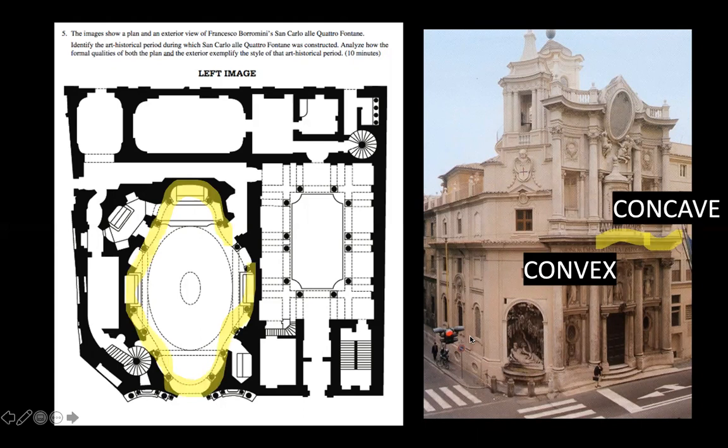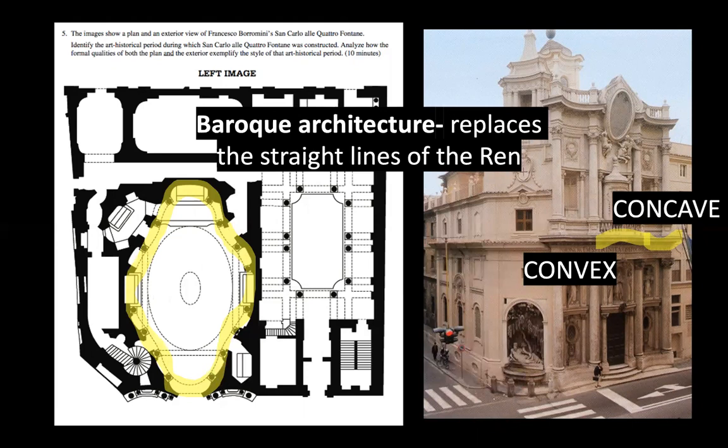In your floor plan, go ahead and highlight that undulating wall moving around the nave. Looking up, you would have this oval dome. Baroque architecture here replaces the straight lines of Renaissance architecture. Our next piece, however, has very straight lines, but this one is undulating — it's supposed to be all about motion and movement.